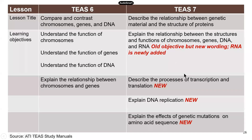First let's look at the differences between TEAS 6 and TEAS 7. The old lesson title is just about chromosomes, genes, and DNA. The main learning objective was to understand the function and relationship between DNA, genes, and chromosomes. That's what's in TEAS 6.